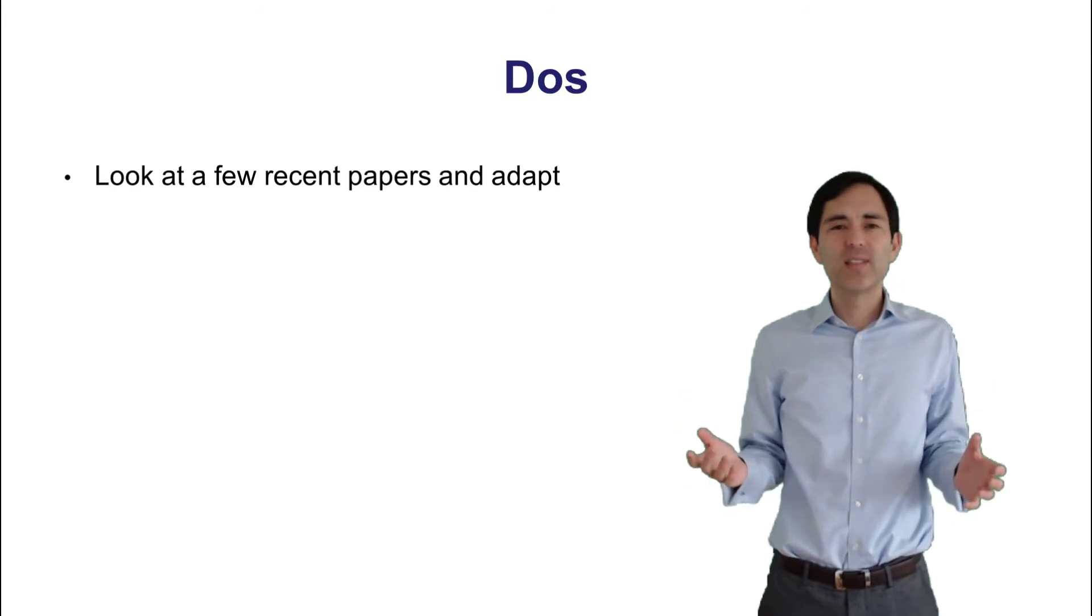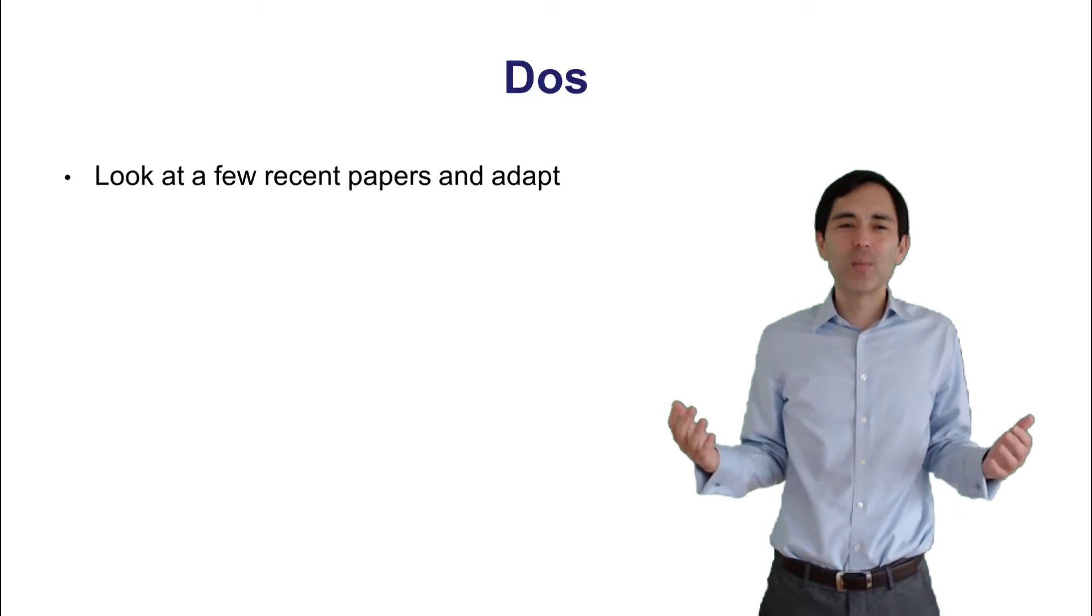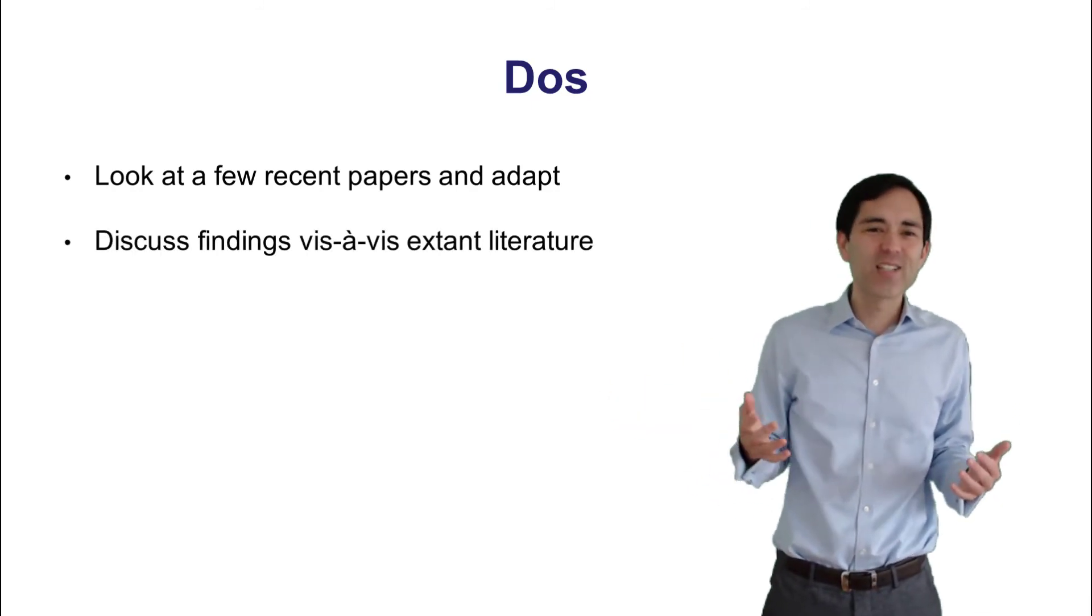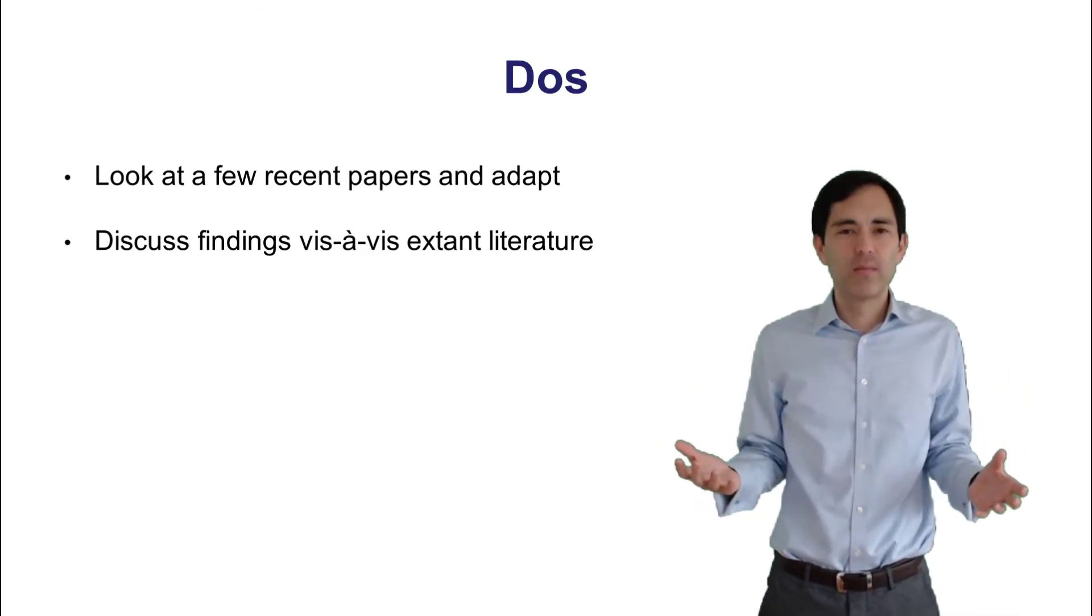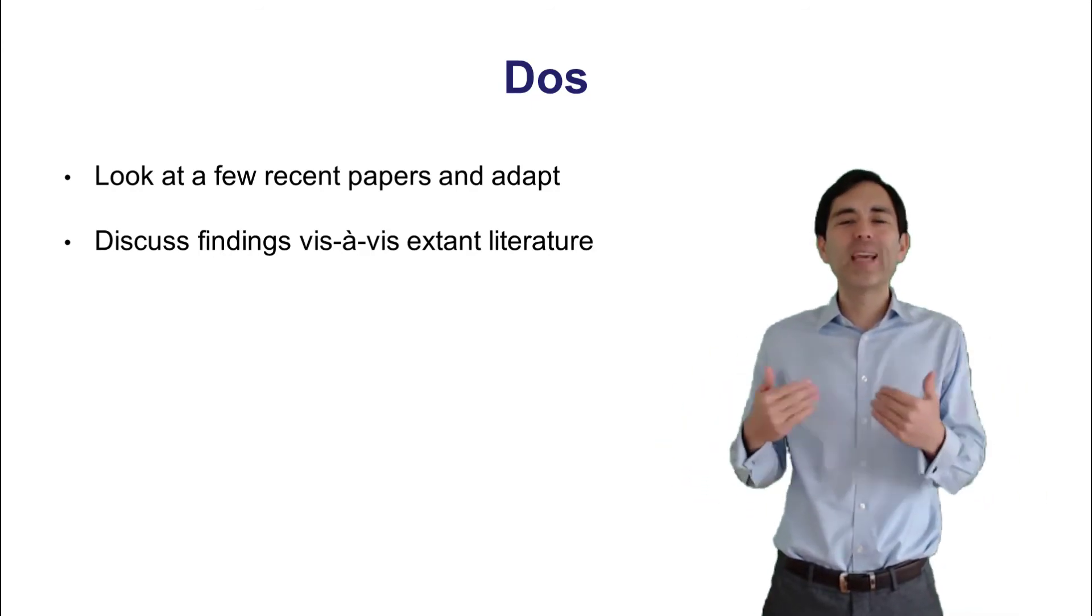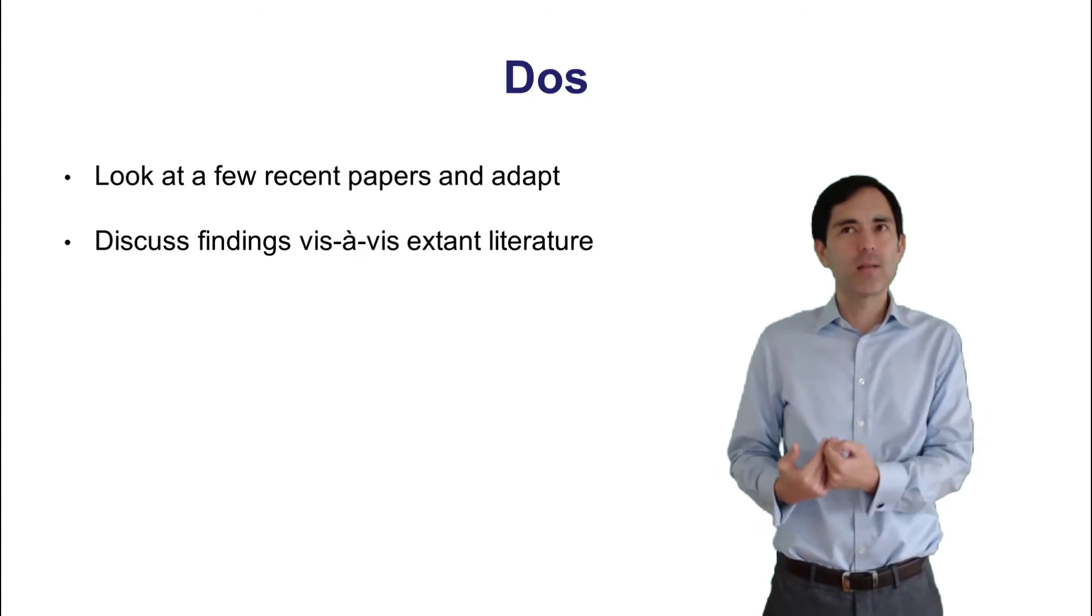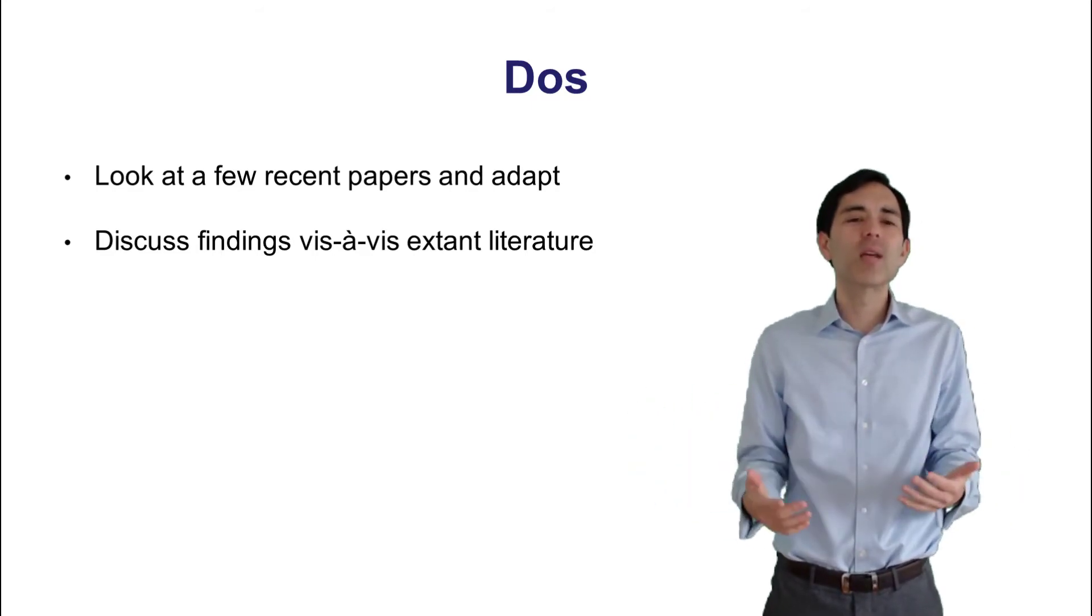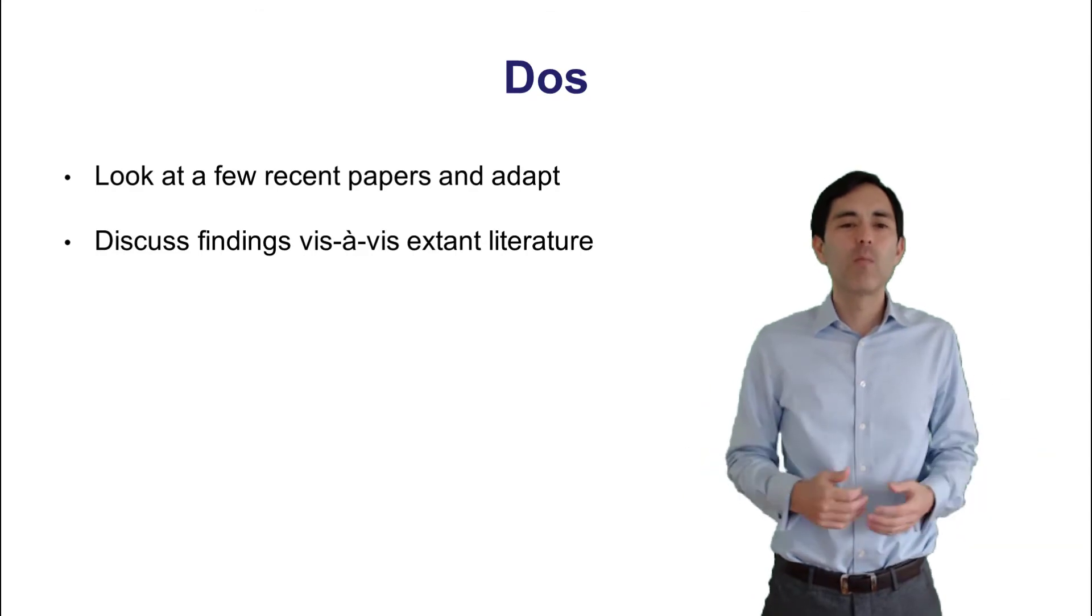What is also very important is, in a discussion section, it sounds super obvious, but still some people forget about that. Discuss. Discussion. Discuss the findings vis-a-vis the extant literature. You're communicating with the literature and the people who have written these pieces. It's a discussion. Imagine you're sitting there and you talk and in the paper you discuss with these other sources such as journals and books.